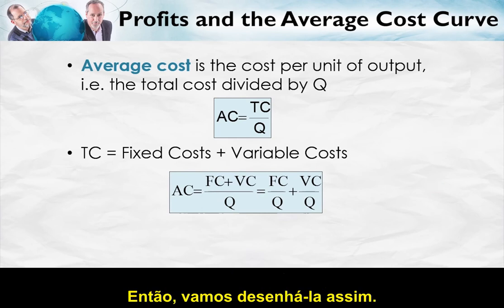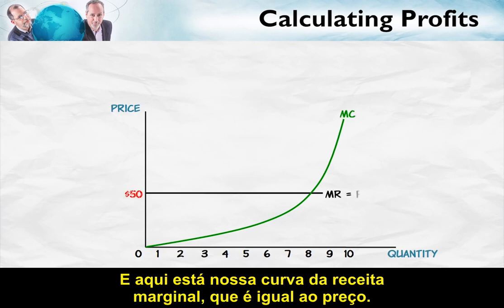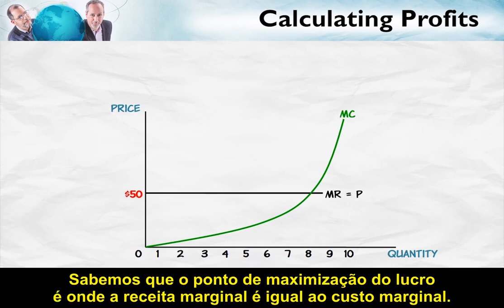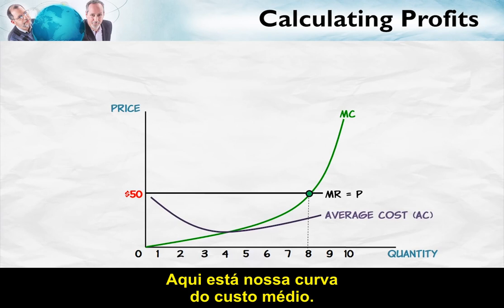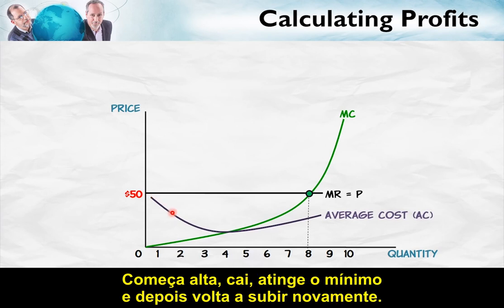So let's draw it like that. Here's our typical marginal cost curve, and here is our marginal revenue curve equal to price. We know that the profit maximizing point is where marginal revenue equals marginal cost. Here is our average cost curve, and notice it has the shape I described: it starts off high, falls, reaches a minimum, and then goes right back up again.